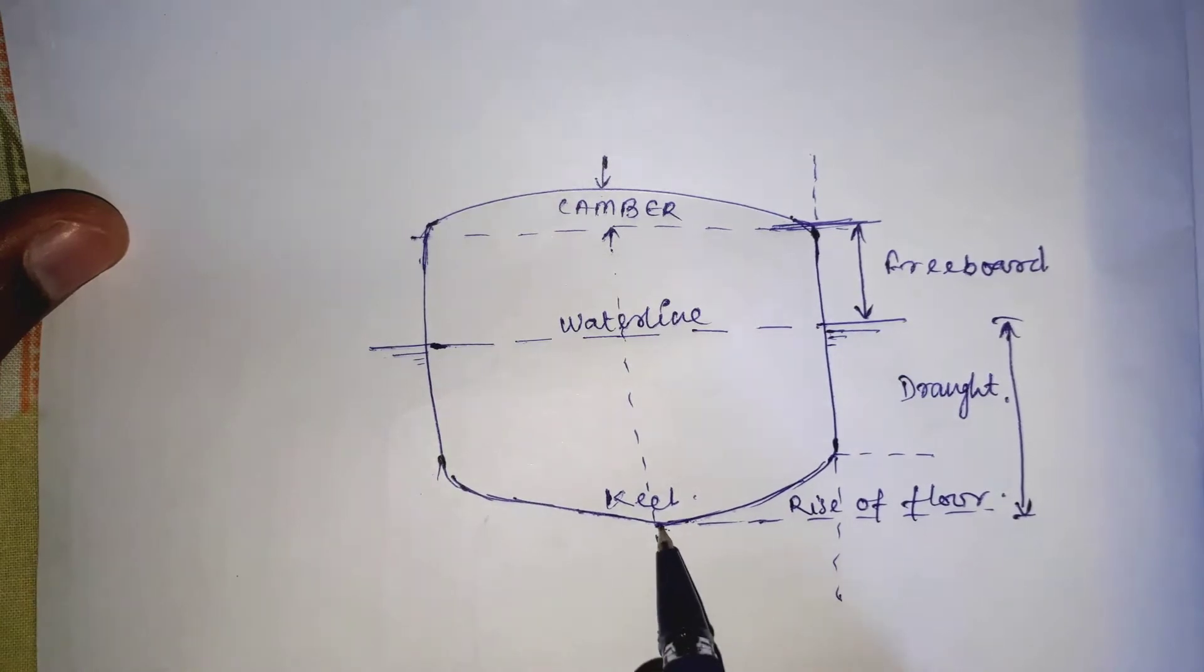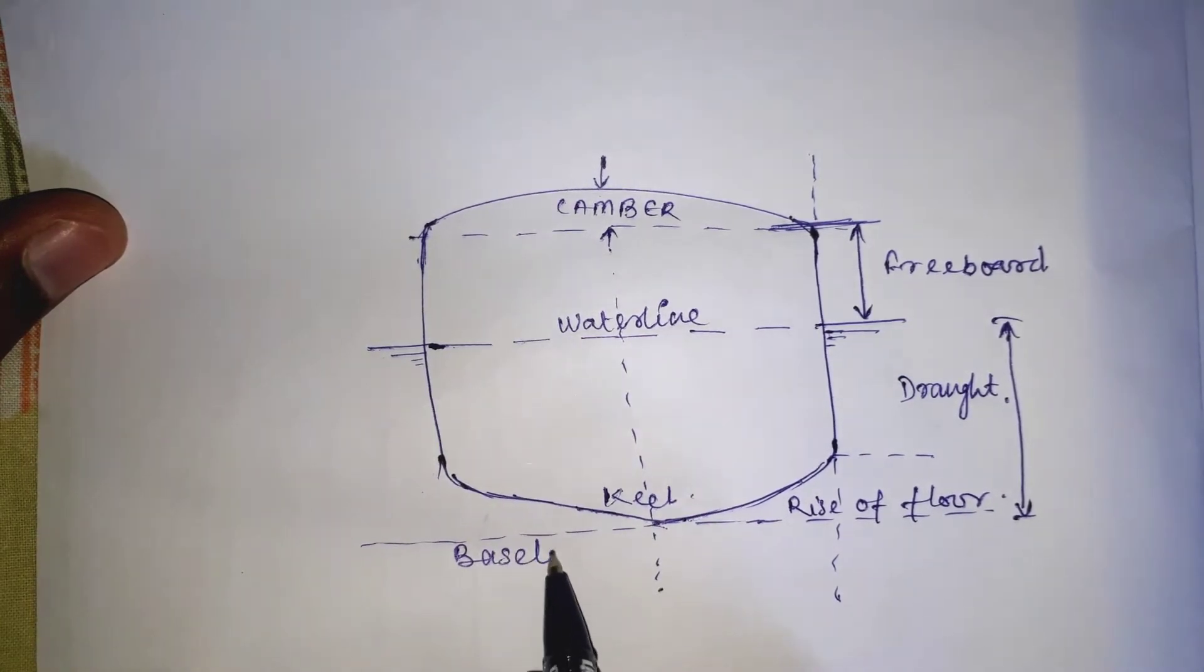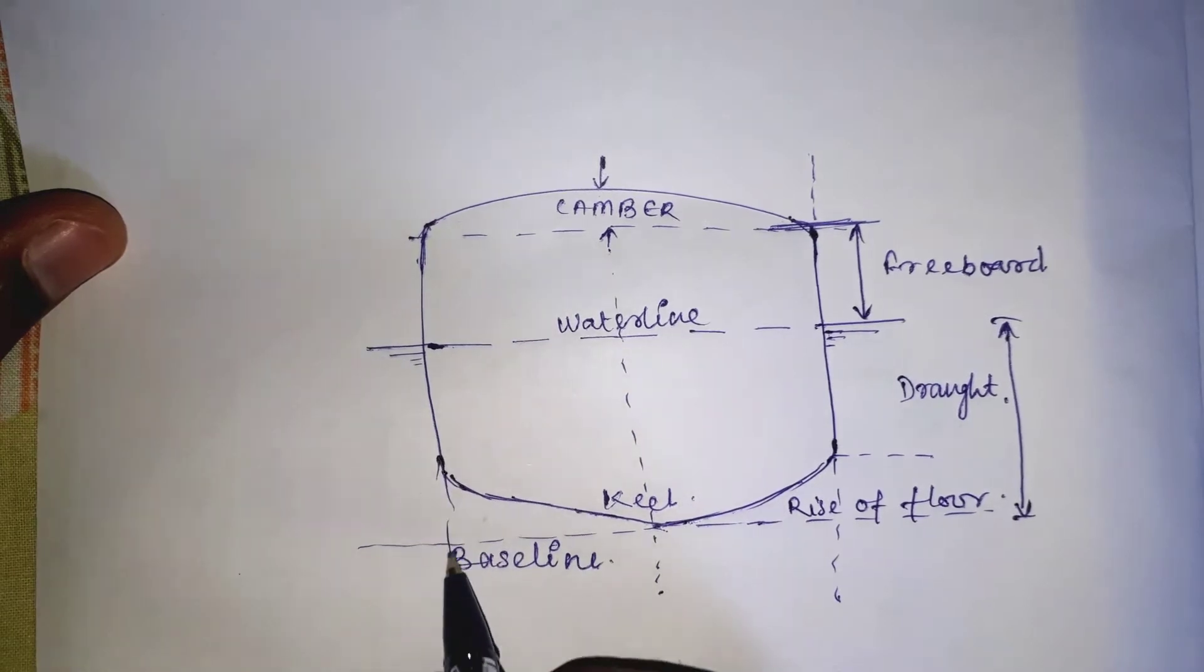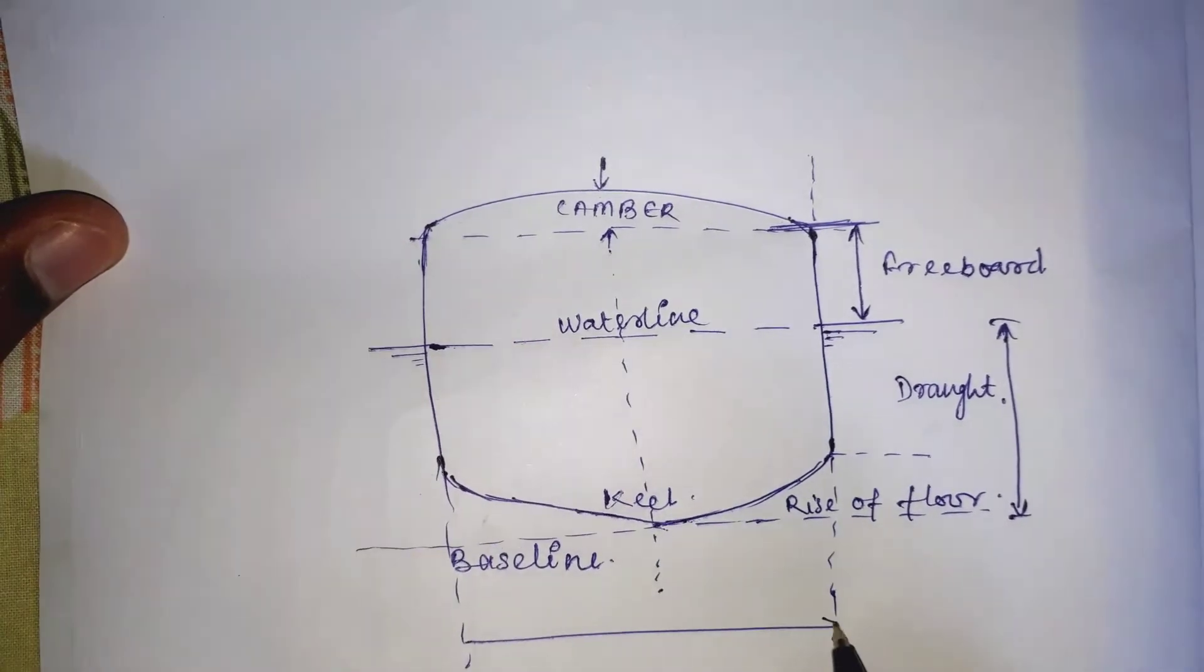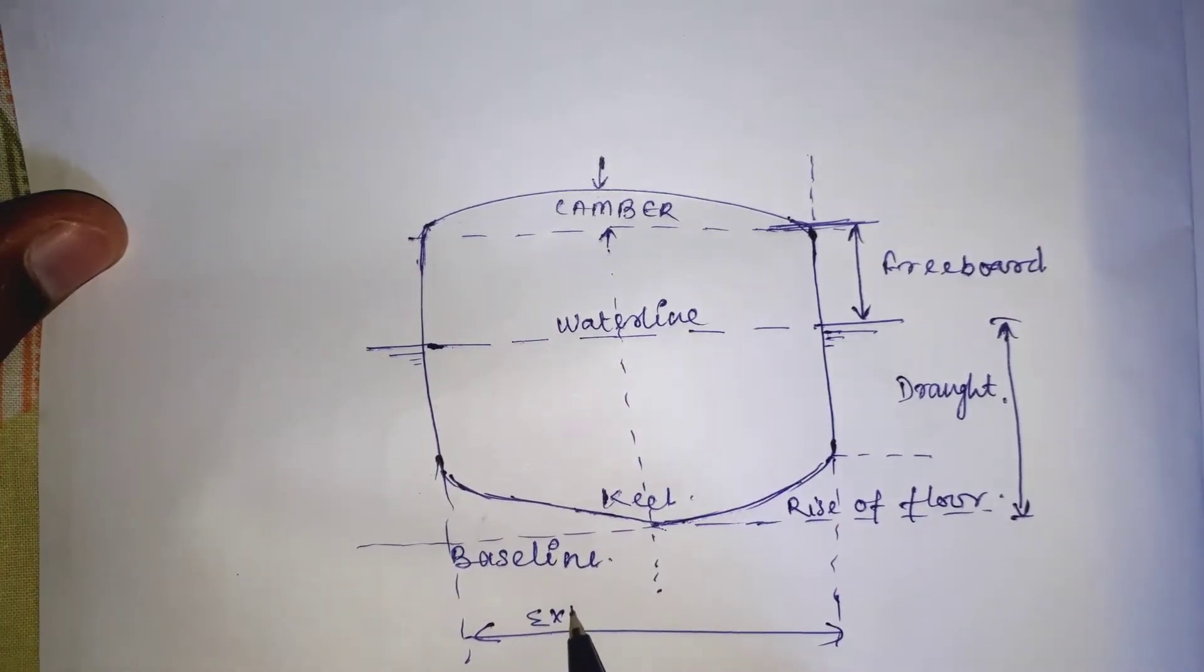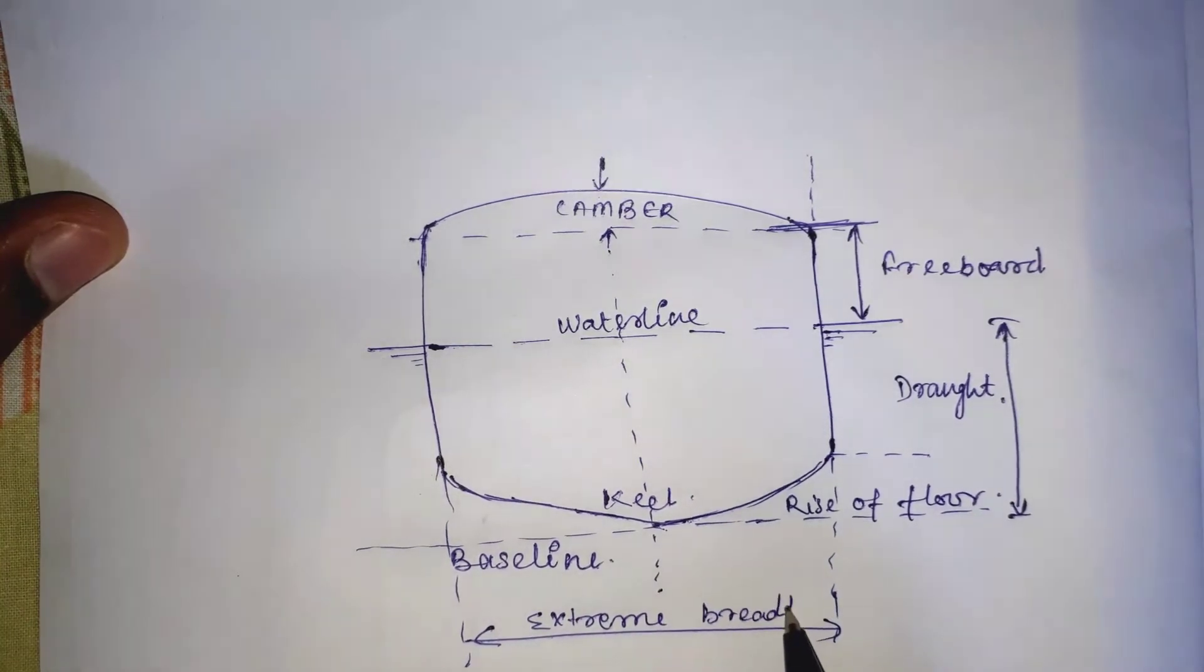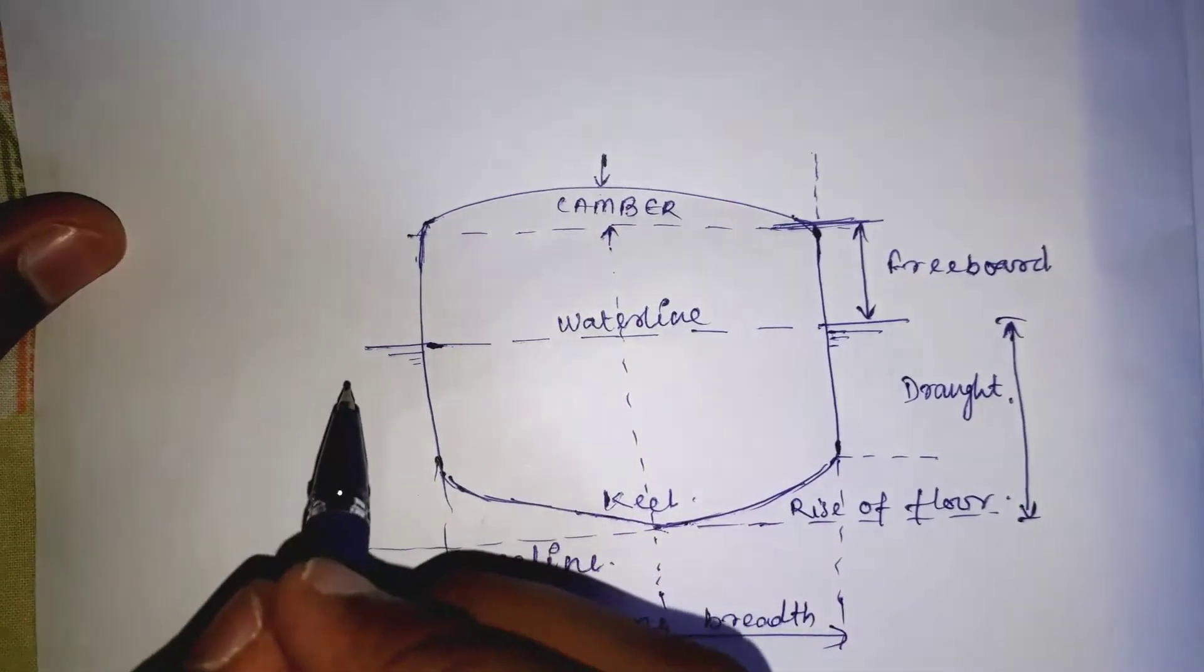Now comes one of the important points, that is baseline. Baseline is an imaginary horizontal datum line drawn through the upper edge of the keel and it is used as a reference line for all vertical measurements.